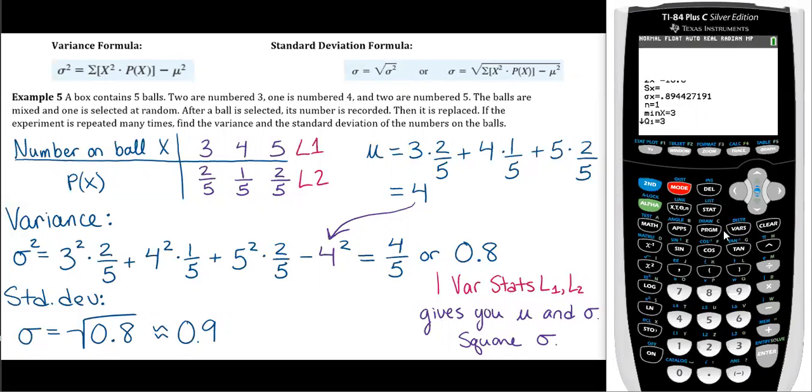When we quit, you just go to vars. That's what it is, not second vars, just variables. And then go down to five, which is statistics. And then go down to four, and you're going to grab the stored value that's in for sigma, and then square that.